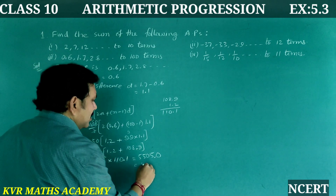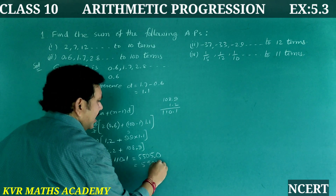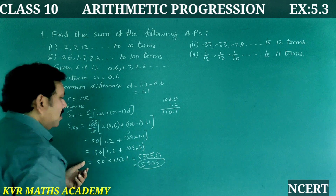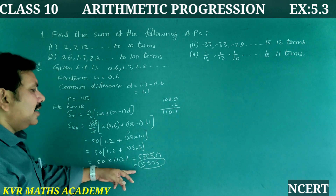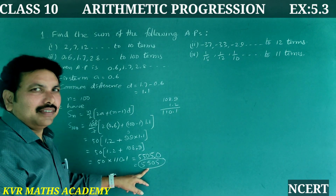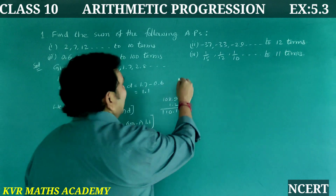Therefore the answer is 5,505. Sum of the first 100 terms is 5,505.